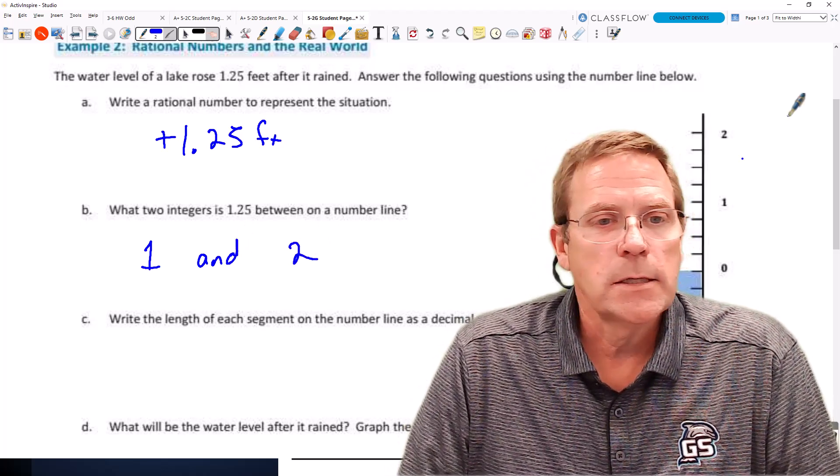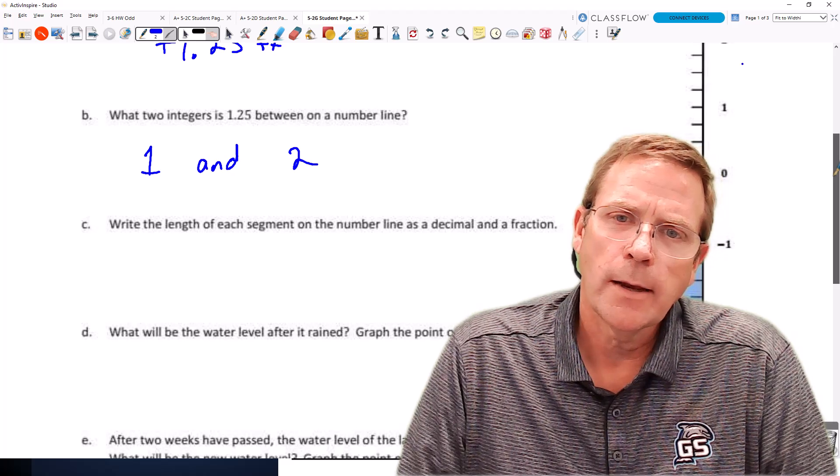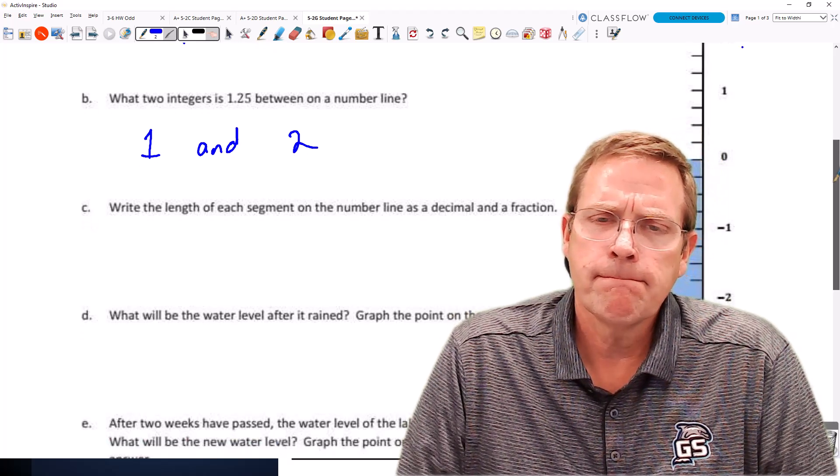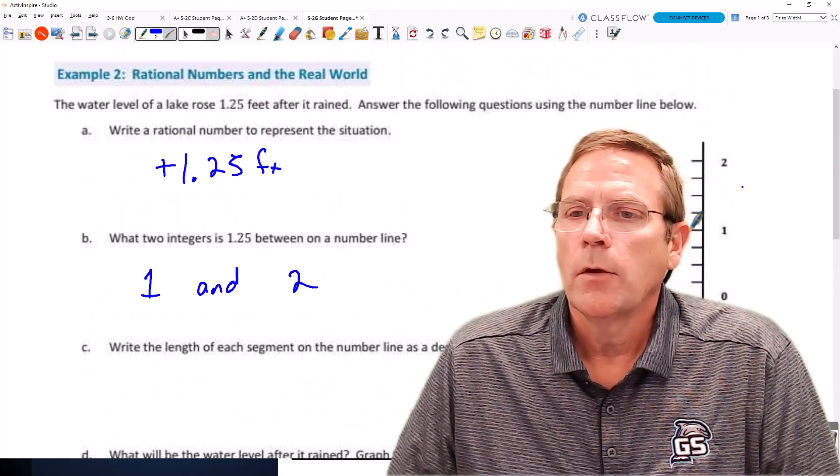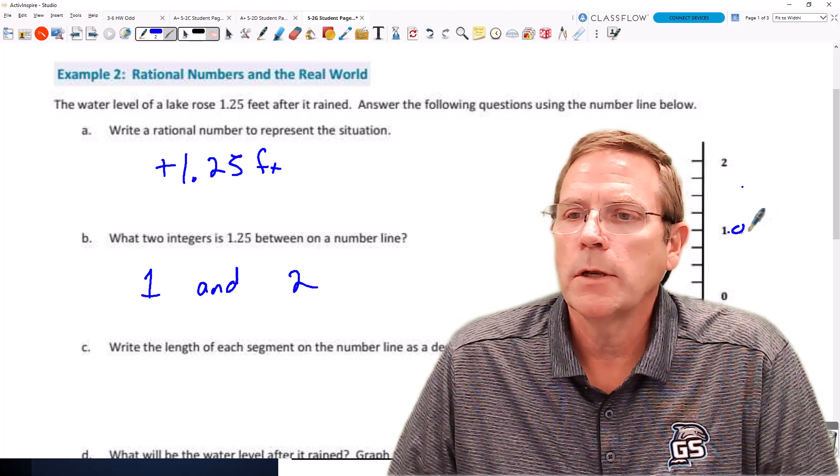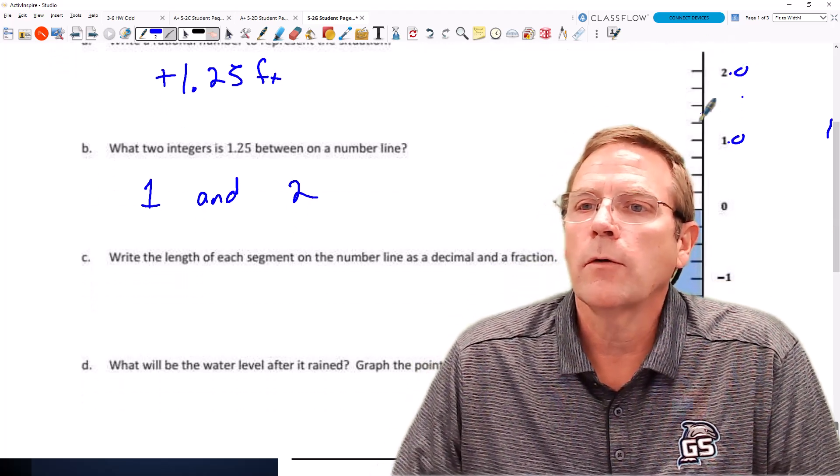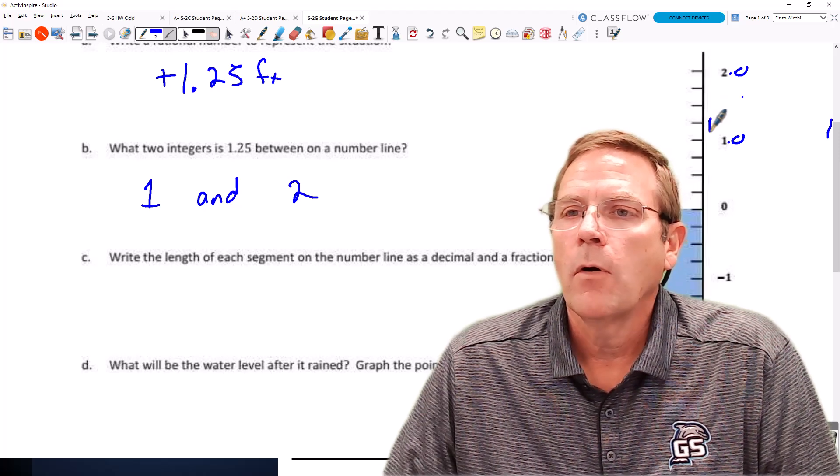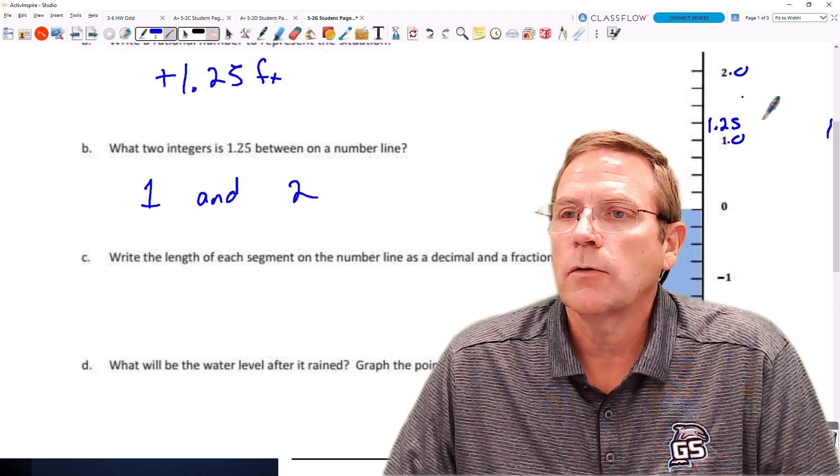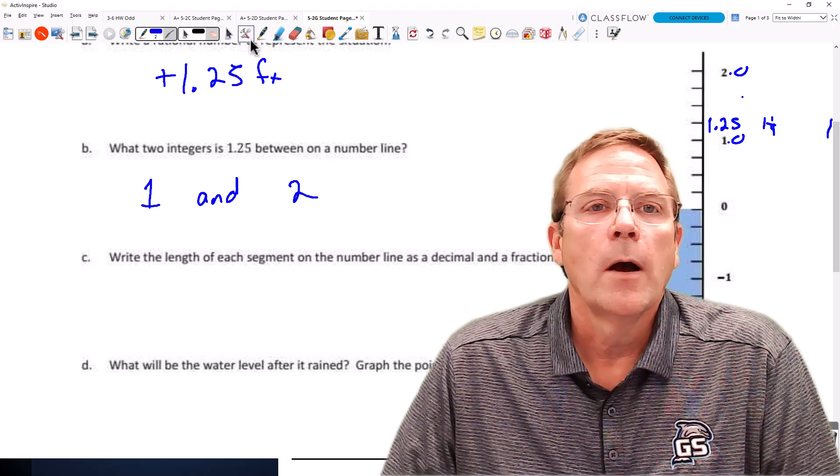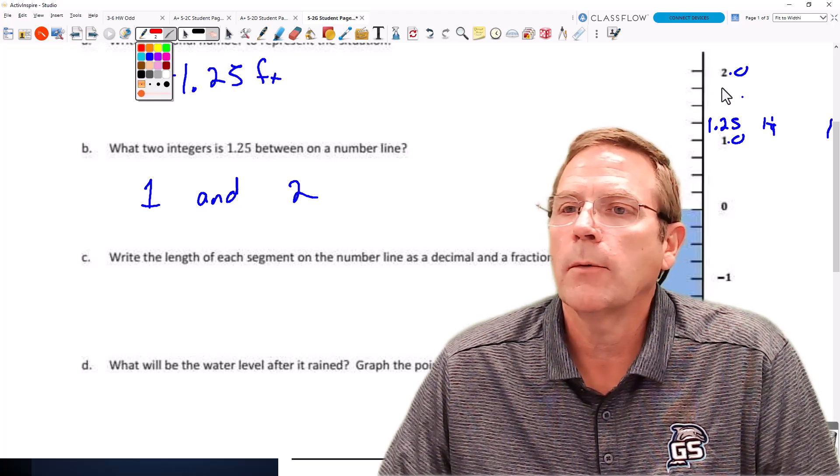Part C says, write the length of each segment on the number line as a decimal and a fraction. So if I'm understanding that right, we're going to be going between 1 and 2. We're going to have 1, which is 1.0. Let's move this up a little bit so you can see it past my head. This would be 2.0, and in between that we would have 1.25, also known as 1 and 1/4.